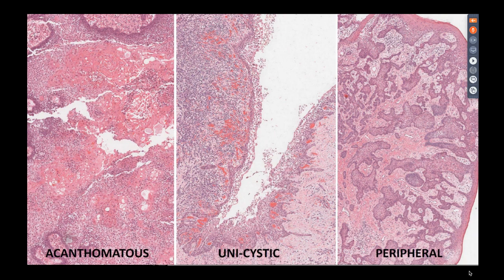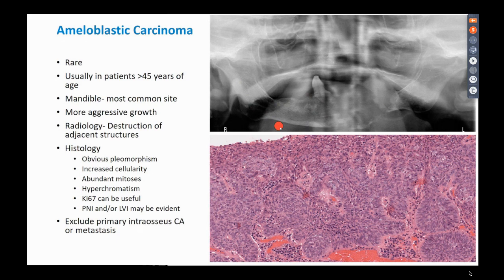The malignant variant is ameloblastic carcinoma, usually in older patients, with the mandible as the most common site. Radiology shows really aggressive growth with extensive bone resorption and the tumor bursting out of the mandible. Histologically there is obvious pleomorphism, hyperchromatism, increased cellularity, mitotic figures, and lymphovascular and perineural invasion. Ki-67 can be helpful to differentiate from conventional ameloblastoma — also look for mitotic figures and correlate with radiology. It's also important to rule out primary intraosseous carcinoma or a metastasis.